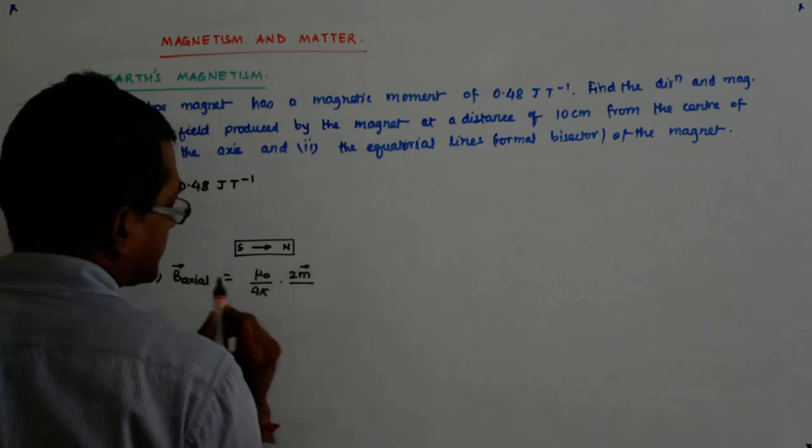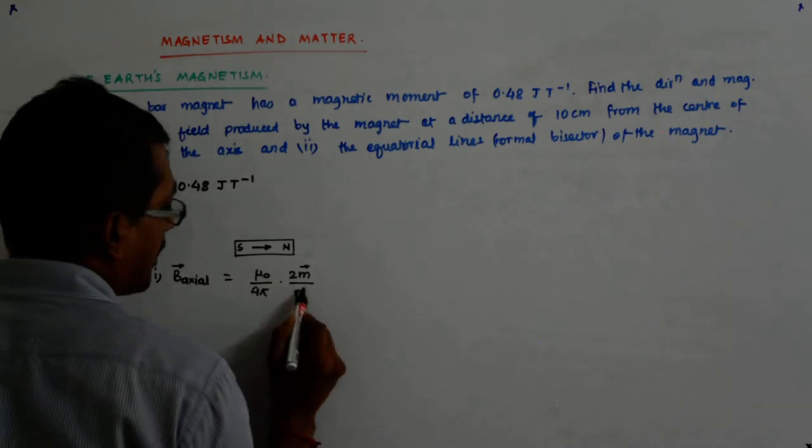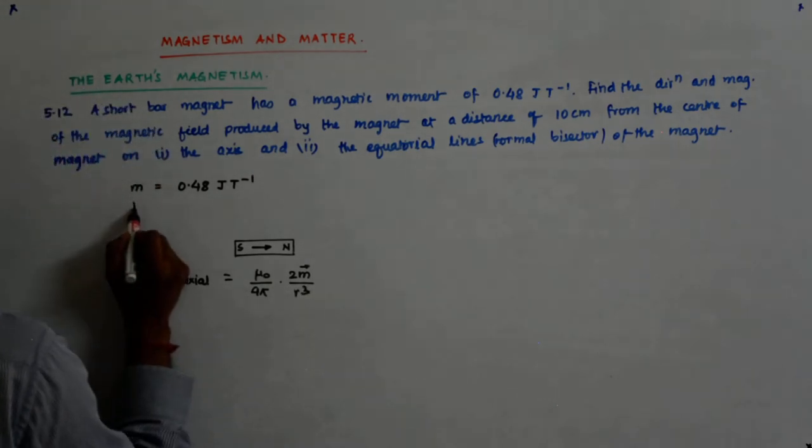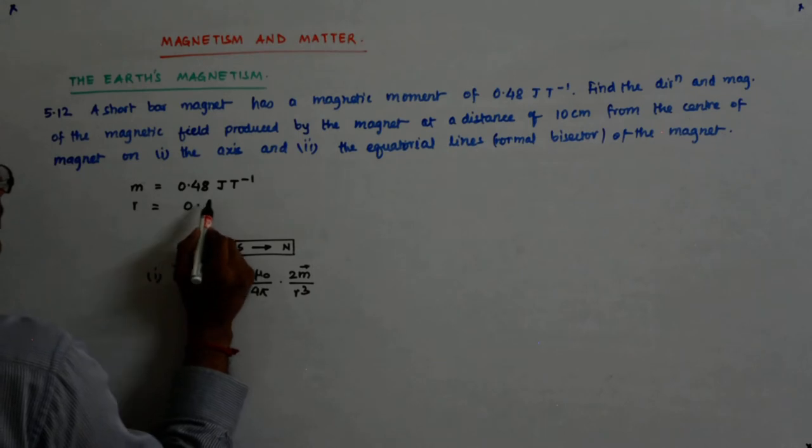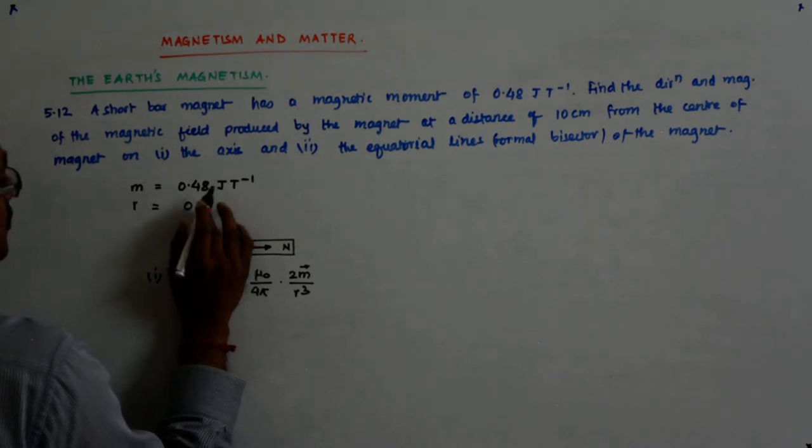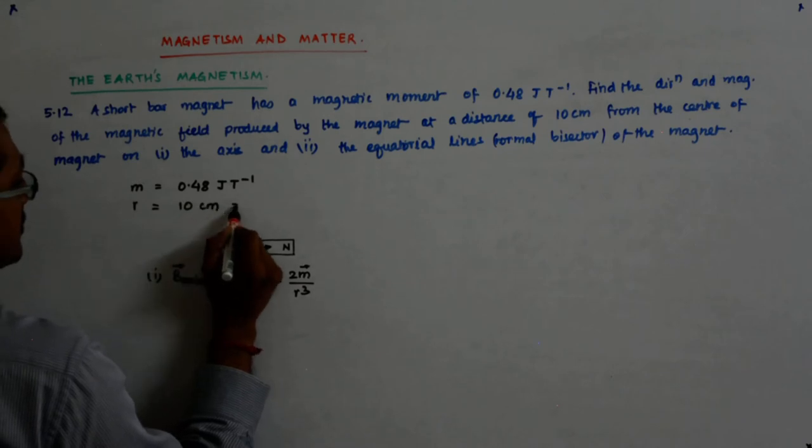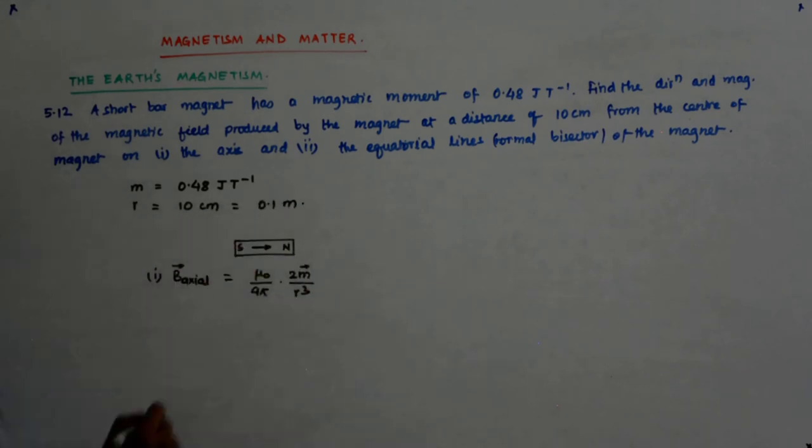Now what is R? R is point, this is 10 centimeters which is 0.1 meter.